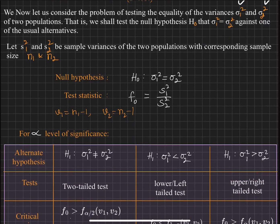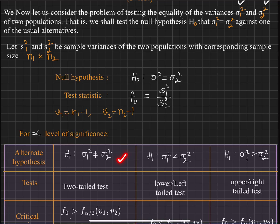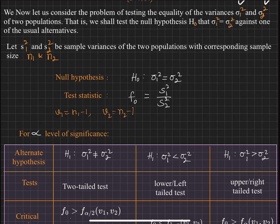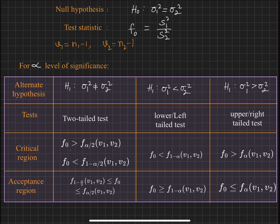For a given level of significance alpha, there are three different cases for the alternate hypothesis. The first case is that the variances of the populations are not equal: Sigma one square not equal to Sigma two square. The second case is that the variance of the first population is smaller than that of the second. The third case is that the variance of the first population is larger than that of the second.